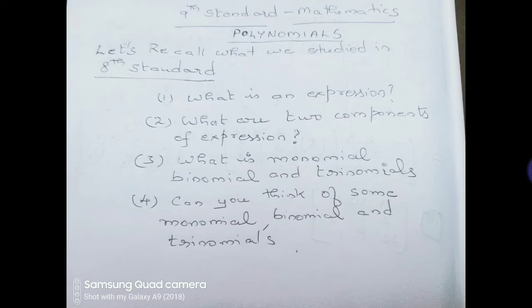The second question: what are the two components of an expression? The two components of an expression are variable and constant. For example, in 5x + 3: x is the variable, 3 is the constant term, and 5x is a variable term. Generally, an alphabet represents the variable.